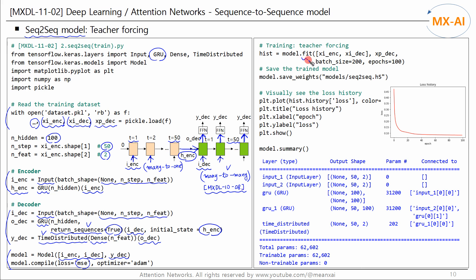We fit this model to the training data. The training data consists of encoder input, decoder input, and decoder output data. We set the batch size to 200 and the number of iterations to 100. Once training is complete, we save the parameters of this model for later use in the prediction model. As training progresses, we can see that the mean squared error loss decreases.